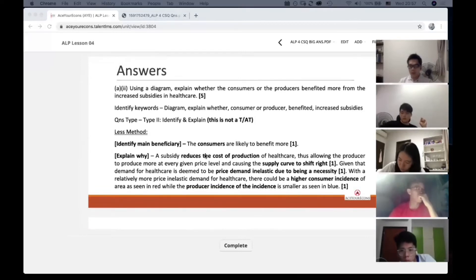So number two, your second mark goes to subsidy. What is the role of subsidy? The role of subsidy reduces the cost of production for healthcare. And this will cause your supply curve to shift to the right. If you have something like this, COP, and stating the direction of your supply curve, going to the right, you get your second mark.